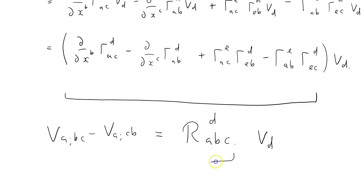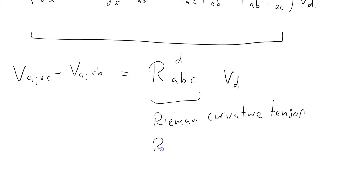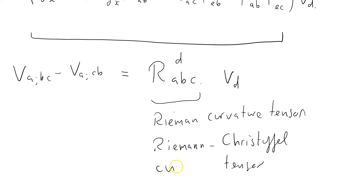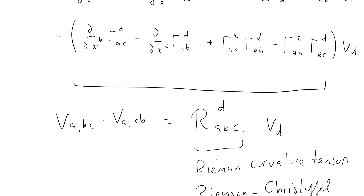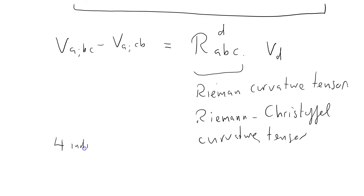This quantity R^D_ABC is called the Riemann tensor — or the Riemann curvature tensor, sometimes called the Riemann–Christoffel curvature tensor. There are different conventions, different sign conventions, and different orderings for the indices; some people write it with all four indices down. I'll need to be very clear in future screencasts which convention I'm using. It's just a linear operator — we're contracting on D.